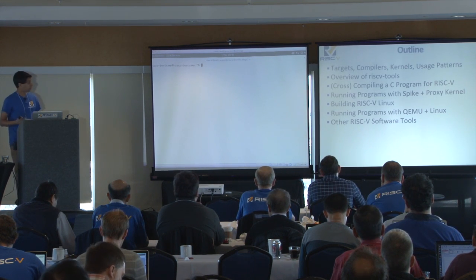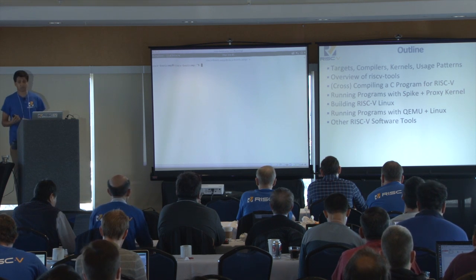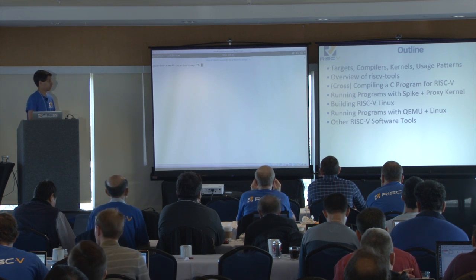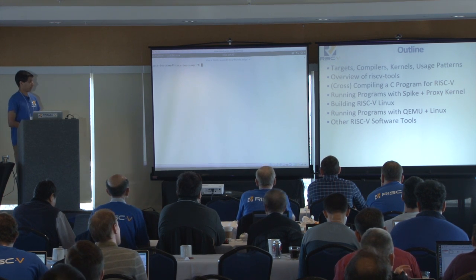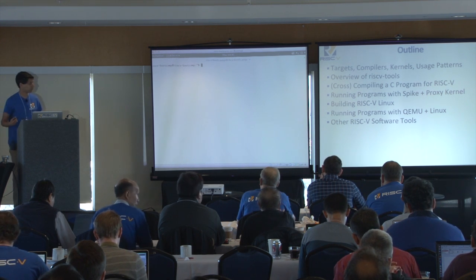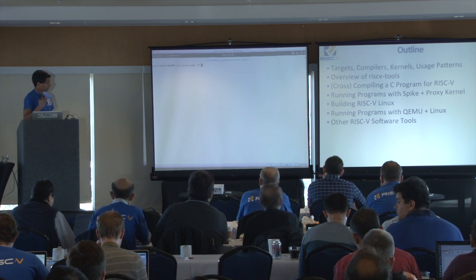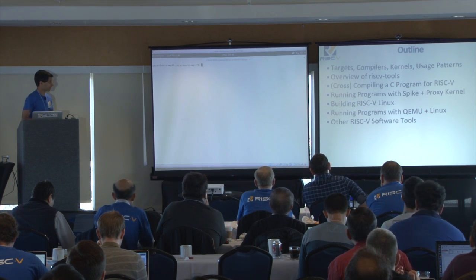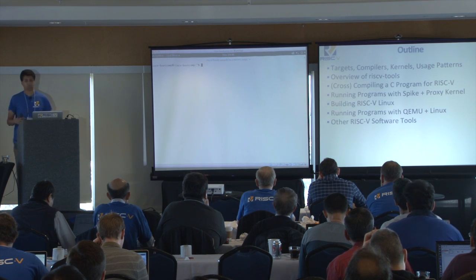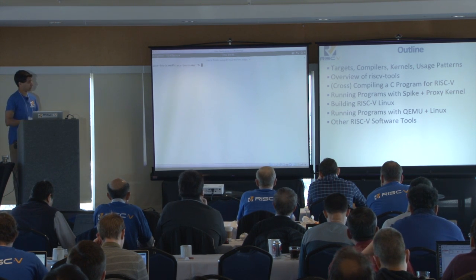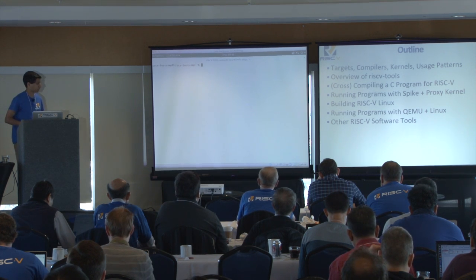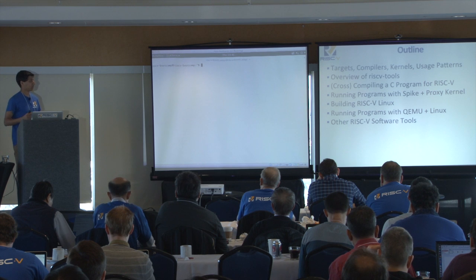So a brief outline of what I'm going to talk about. First we'll review what Andrew talked about yesterday — the targets, compilers, kernels, and the two main usage flows. Then I'll give you an overview of what's in the RISC-V tools repo, our main repo housing all production-ready tools. Then we'll talk about cross-compiling a C program for RISC-V, running programs on Spike using the proxy kernel, building RISC-V Linux, running programs with QEMU on top of Linux, and briefly some other RISC-V software tools you might find useful.